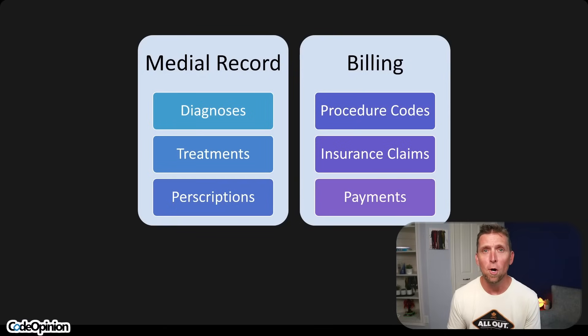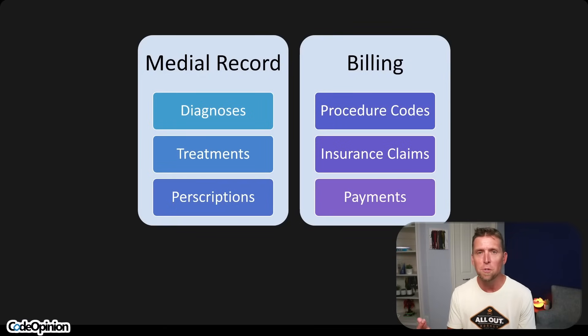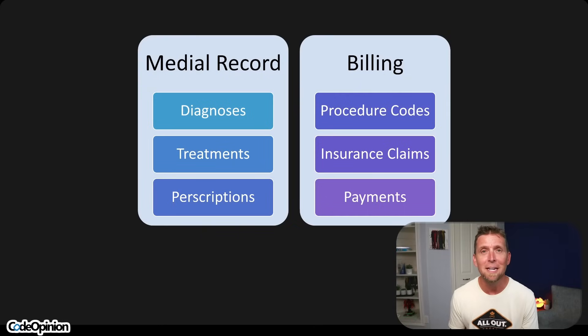Is a patient in an EMR — with medical records for diagnosis, treatments, and prescriptions — the same boundary as where we have procedure codes, claims, and payments? Likely not. In all of these examples, in the real world these seem the same, but in our system they're not. Why? Because our models are driven by capabilities, not purely by data. Our capabilities are what are persisting that data. Everything is driven by capabilities, not data alone — unless you're purely in a CRUD-based system.